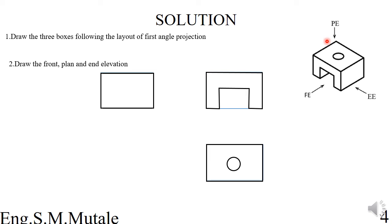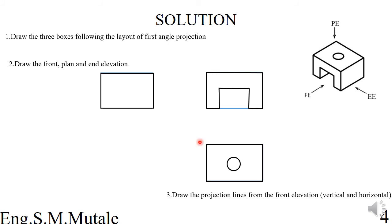Step three is to draw projection lines from the front elevation. These are simply vertical and horizontal lines projected from the front elevation going to the plan and end elevation views. Horizontal lines go across to the end elevation, and vertical lines go downward to meet the plan view.